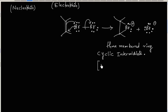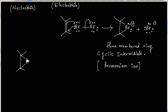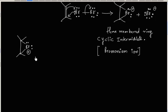This cyclic intermediate is called bromonium ion. If you have a chloro group it would be called chloronium ion, or in general, halonium ion. This intermediate is very stable because all atoms have their octets complete.